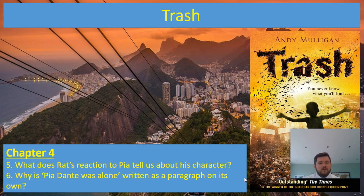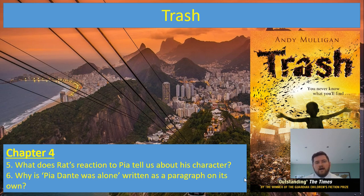And chapter four, which is your final chapter for today. What does Rat's reaction to Pia tell us about his character? And why is 'Pia Dante was alone' written as a paragraph on its own? There you're thinking about how the author is trying to make an impact. You're going to need the APE approach because you'll need to explain your reasons behind why you think the author has done that.